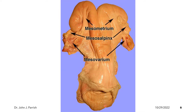The suspensory tissue which supports the ovaries, oviduct, uterus, cervix, and anterior vagina is the broad ligament. It supplies the vascular system, lymphatic drainage, and the nerves to the tract. The portion which attaches to and supports the ovary is the mesovarium. The oviduct is surrounded by and supported by the mesosalpinx. The uterus is supported by the mesometrium.